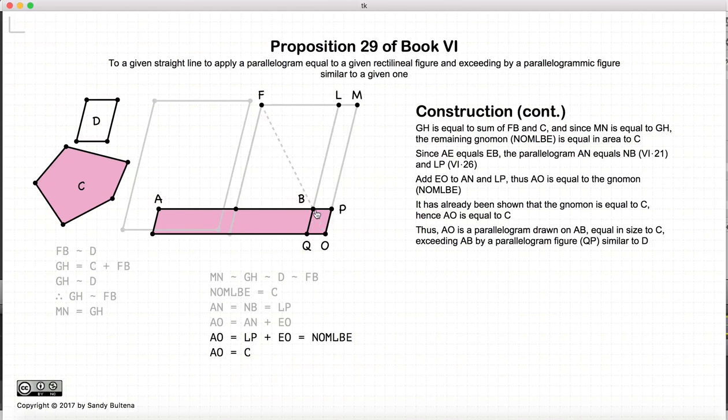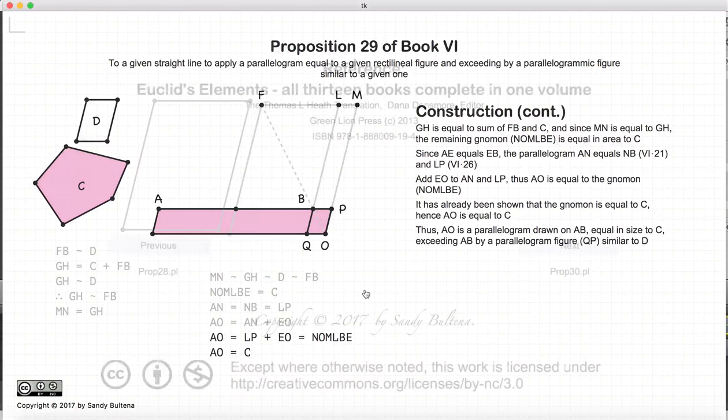And we know that BO is similar to D because it's on the same diagonal of another parallelogram that was similar to D. So BO is similar to D. Thus we have drawn a parallelogram AO that is equal in area to C and extends past the point E by a parallelogram that is similar to D. And that's it for this particular proof.